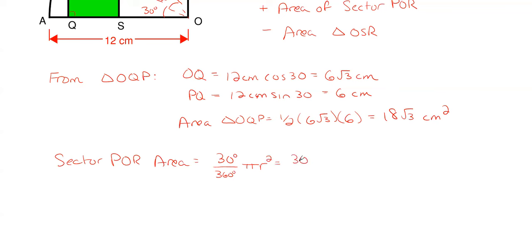So we would have 30 degrees over 360 degrees pi times R which is 12 centimeters squared and this gives me exactly 12 pi centimeters squared. All right so there's our second one done.